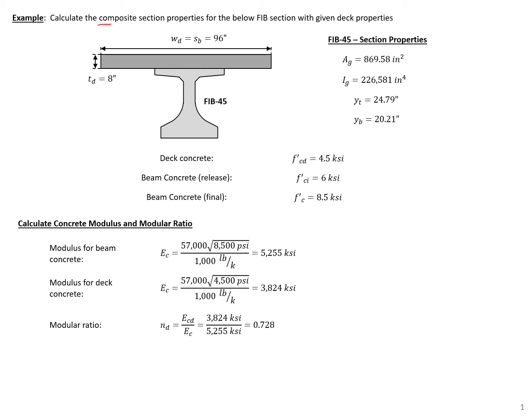In this example problem, we're going to calculate the composite section properties for the Florida I-beam section with a cast-in-place deck on top that has been made composite with the precast section. We have a 4.5 ksi deck concrete and an 8.5 ksi beam concrete. We can use these to find the modulus of elasticity for each, then divide the deck modulus by the beam modulus to find our modular ratio, which we'll use to transform our deck into an equivalent area compatible with our beam concrete.